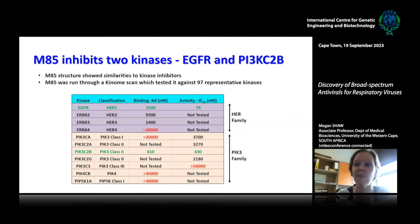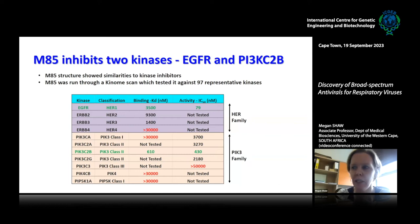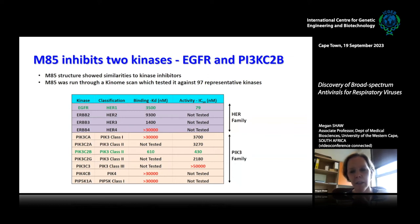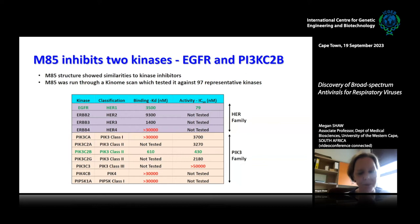With M85, we got a little bit lucky — its chemical structure resembles that of a kinase inhibitor. As soon as we got that from our chemists, we put M85 through a kinome scan and tested it against a number of kinases. Two particular families came up: the HER family, which includes EGFR, and the PI3 kinase family. The specific kinases showing inhibition by M85 were EGFR and PI3 kinase C2β, which is a class 2 PI3 kinase.